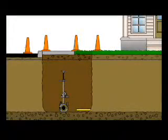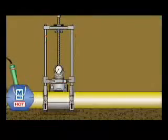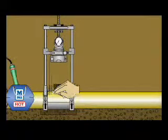The McElroy Sidewinder is the easiest machine for fusing branch saddles, tapping tees, and service saddles.